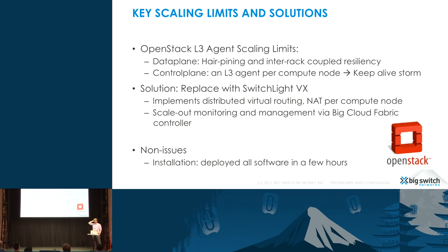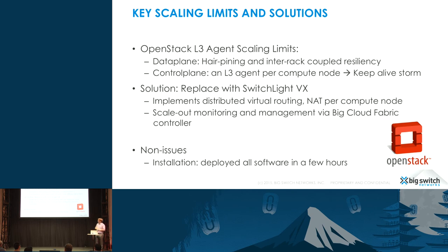These are the two problems we ran into as you start to scale out to 300 nodes. Our virtual switch does actually solve these problems. First, we implement distributed virtual routing and NAT per compute node. That guarantees that between any two points, you'll never do hairpinning — you'll always follow the shortest path. Also, if you have some resiliency issue and a rack goes away, only the nodes in that rack are affected. We've also spent a lot of time figuring out how to do scale-up monitoring of lots of switches and nodes, using our OpenFlow controller and SDN primitives, so we avoid all of the keep-alive-storm type issues.